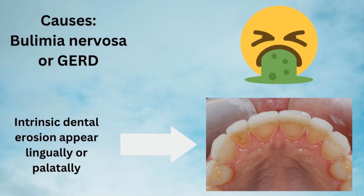Intrinsic dental erosion appears lingually or palatally — most commonly you will see it lingually on the lower incisors. Behind it is bulimia nervosa or GERD, which is gastroesophageal reflux disorder, a stomach disorder that causes repeated vomiting. If you have a young patient aged around 20 to 35 with abnormal wear on the upper or lower anterior teeth, you should ask whether they have a stomach disorder or are vomiting.